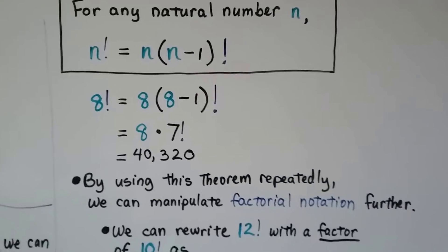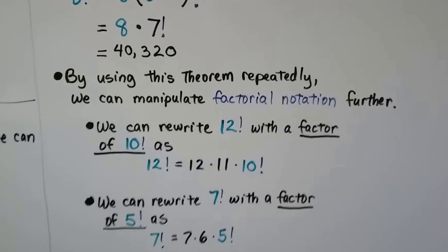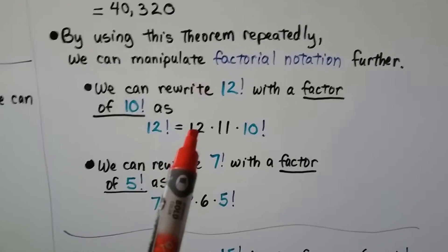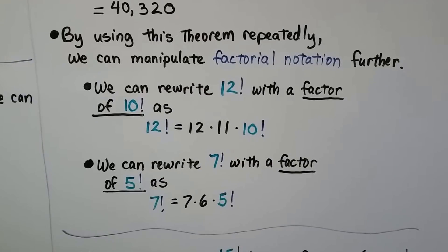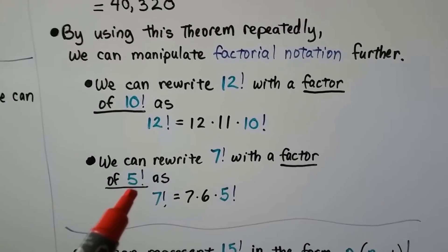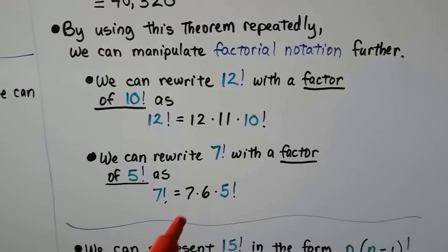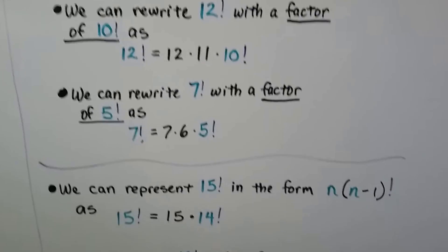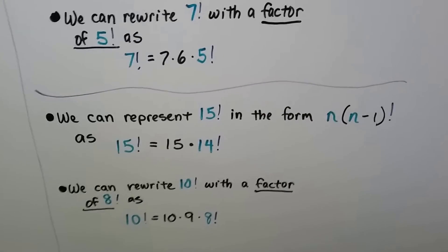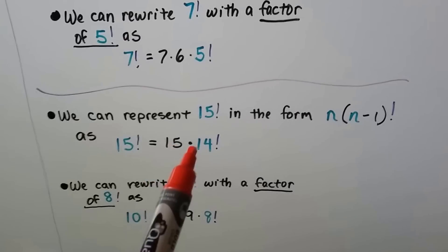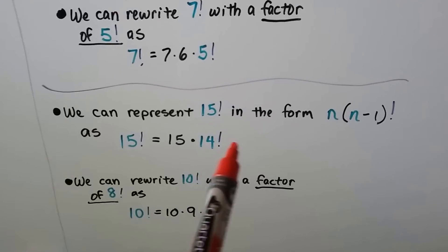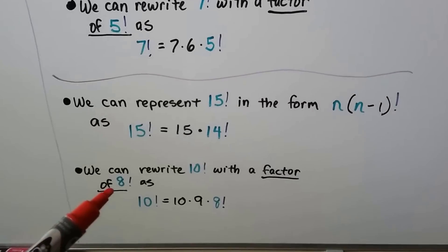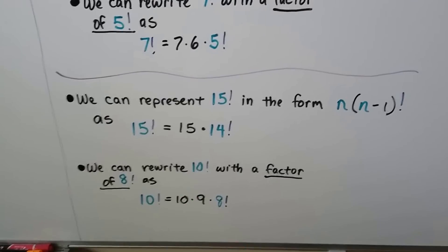By using this theorem repeatedly, we can manipulate factorial notation further. We can write 12 factorial with a factor of 10 factorial: just write 12 times 11 times 10 factorial. We can rewrite 7 factorial with a factor of 5 factorial: that would be 7 times 6 times 5 factorial. We can represent 15 factorial in the form n times n minus 1 factorial: it would be 15 times 14 factorial, and we'd still have the list of natural numbers descending to 1. We can rewrite 10 factorial with a factor of 8 factorial as 10 times 9 times 8 factorial.